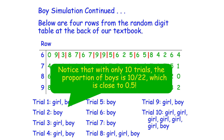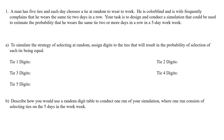Let's look at another example. A man has five ties, and each day he chooses a tie at random to wear to work. He is colorblind, and his wife frequently complains that he wears the same tie two days in a row. Your task is to design and conduct a simulation to estimate the probability that he wears the same tie two or more days in a row in a five-day workweek.